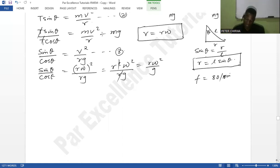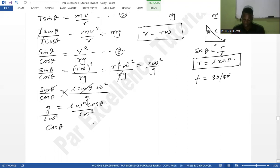When we replace, we are going to have sine theta over cos theta being equal to R here is L sine theta times omega squared over G. So you can see that we have a sine and a sine here, so here they go. And we can cross multiply and we're going to have G being equal to L omega squared cos theta. And then we can divide by L omega squared. So cos theta is G over L omega squared like that.